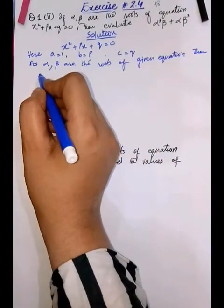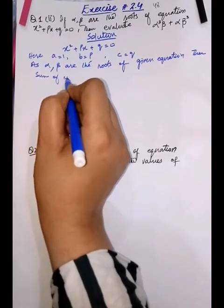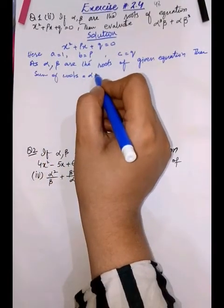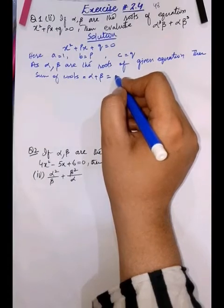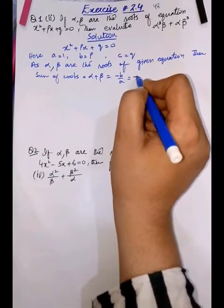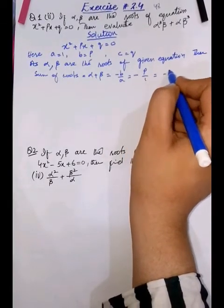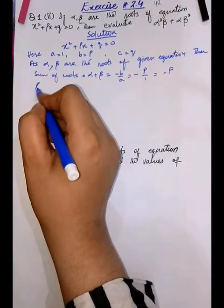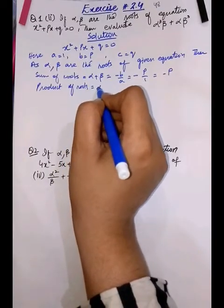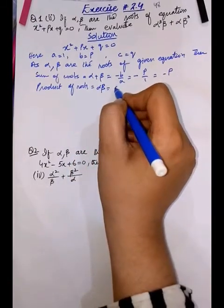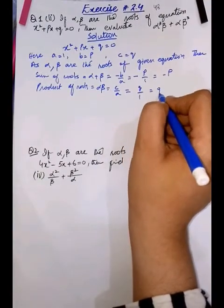Then we can find the sum of roots, that is alpha plus beta. The formula for sum of roots is minus b over a. Here b is p and a is 1, so it means we have minus b. The product of roots is alpha times beta. The formula for product of roots is c over a, and c is q and a is 1, so we have q.